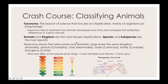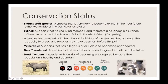Species and subspecies are some of the most specific ways to classify animals, and that's what we're referencing when we talk about conservation status or an endangered species — a species that is very likely to become extinct in the near future, either worldwide or in a particular jurisdiction.